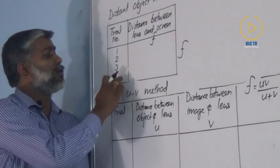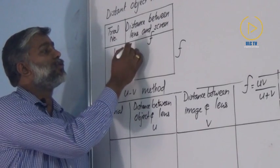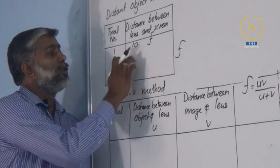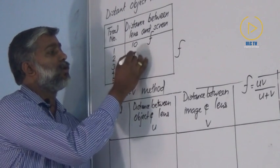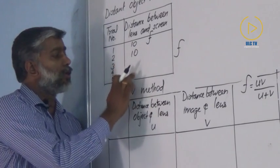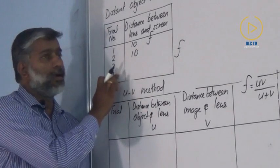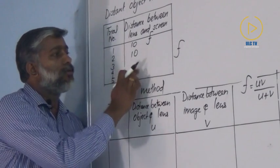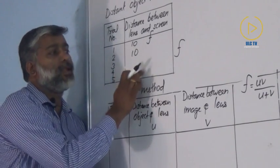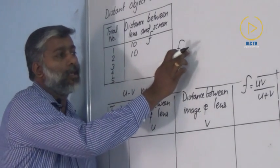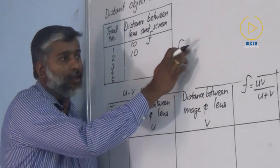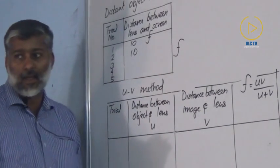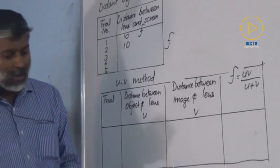So I am noting the values — the focal length by distant object method. Trials one through five. In the first case I got the value as 10, and in the next cases also 10. I can take five trials and the average value of focal length can be obtained. The rough value of focal length is 10 centimeter.